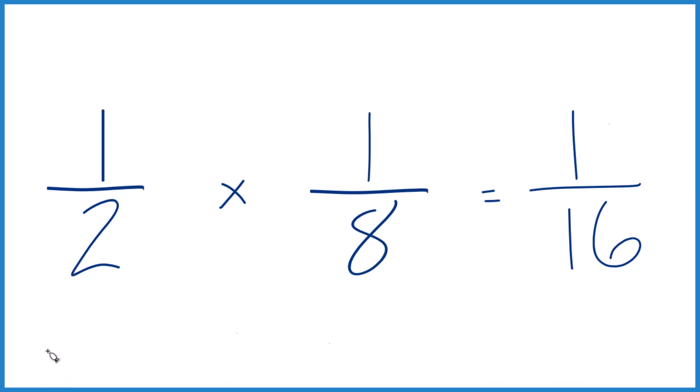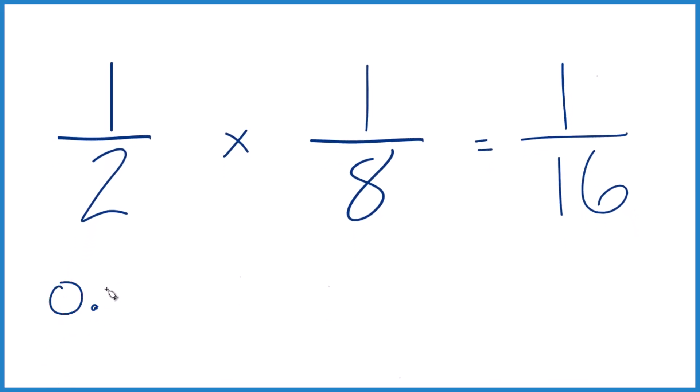We converted these to decimals. One-half, that's 0.5, and then one-eighth, that would be 0.125. And we do the multiplication, we get 0.0625, and that has the same value as one-sixteenth. These are equal.